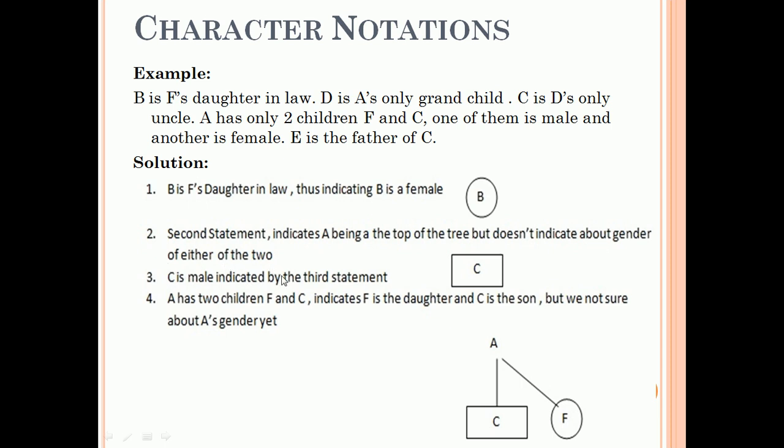C is male indicated by the third statement. Now A has two children F and C, which indicates F is the daughter and C is the son, but we are not sure about A's gender yet. So A is here, C and F.